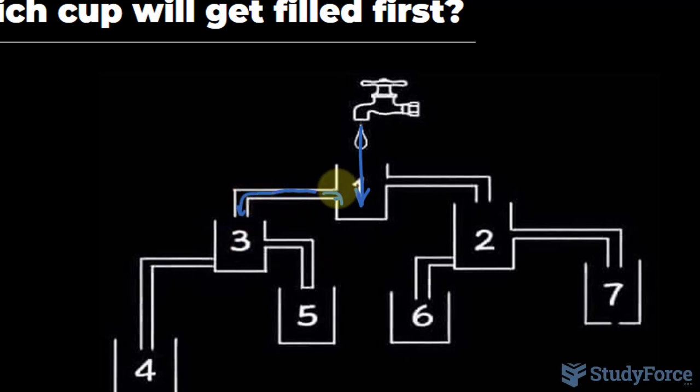Remember, it cannot go past this point until everything here and here and here, hypothetically, is filled up because the flow rate going in is equal to the one going out.